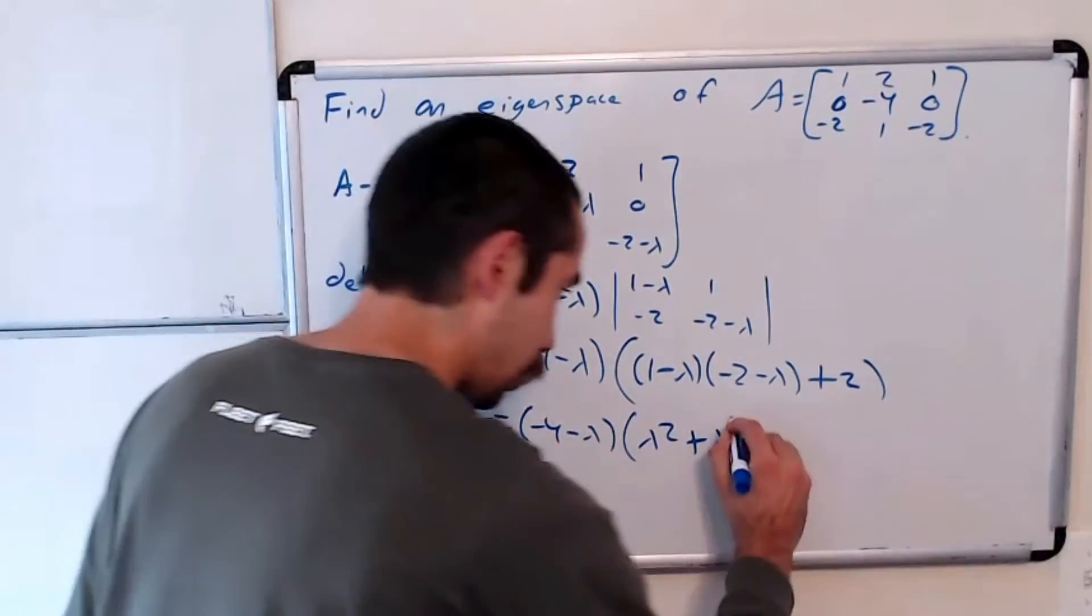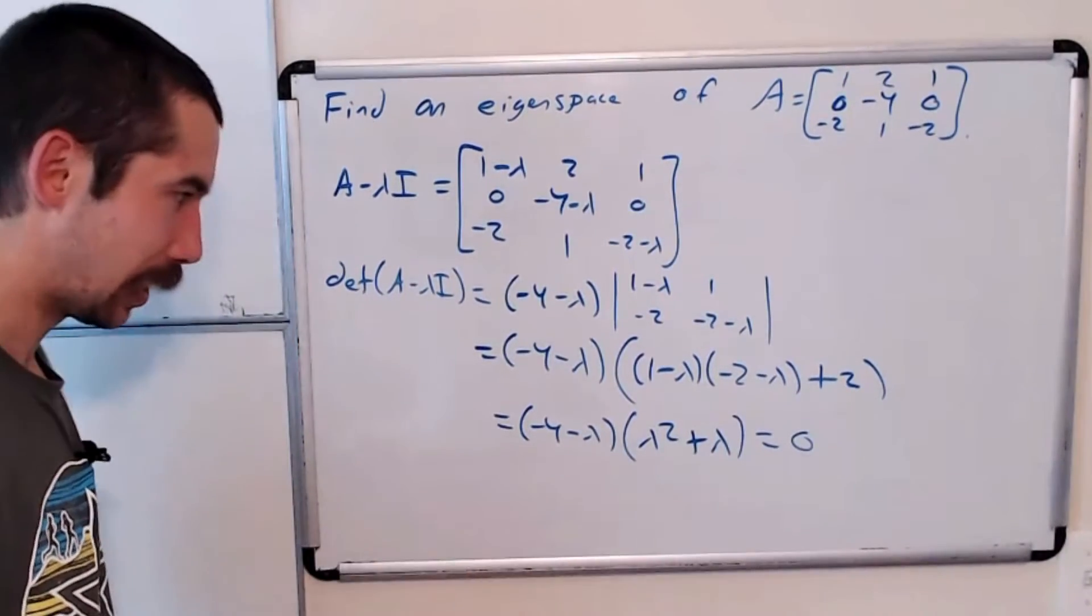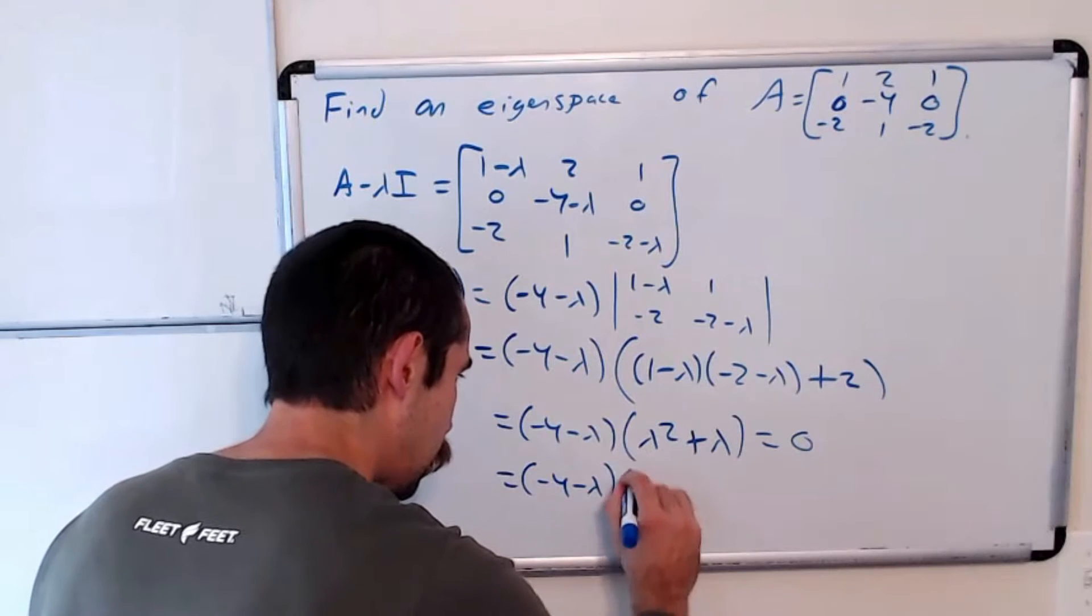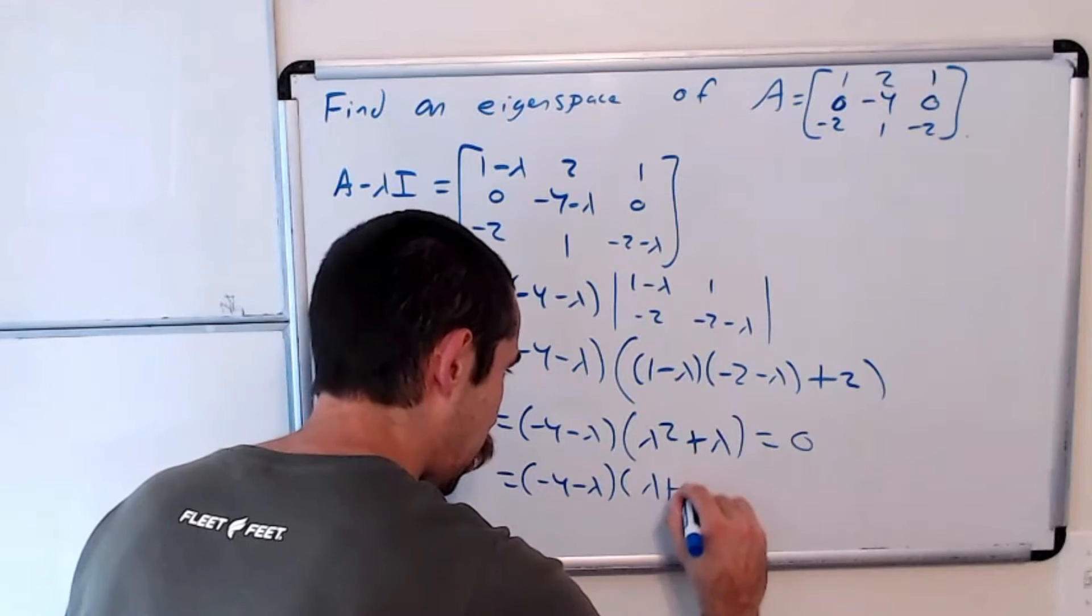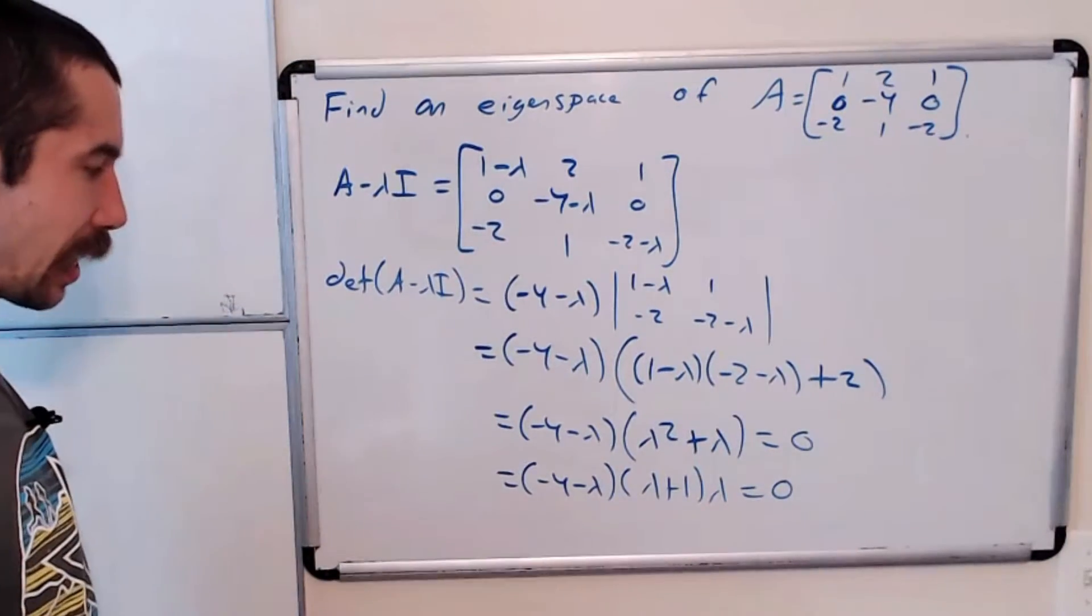Which is 0, equals 0. Let's factor this completely. We get negative 4 minus lambda, lambda plus 1, and lambda, and that's equal to 0. So our eigenvalues.